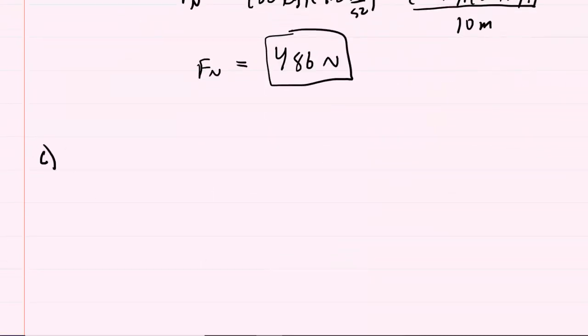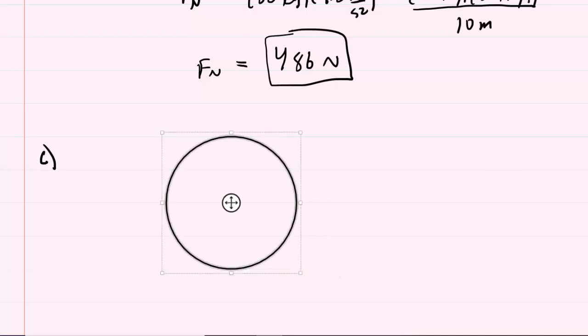In part C, the person is now located at the bottom of the circular path. So he's down here. We once again have mg pointing downward. The normal force is pointing upward, and the center of the circle is located here.